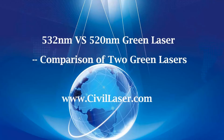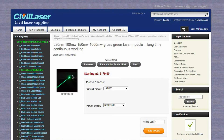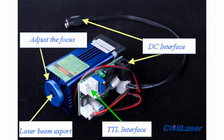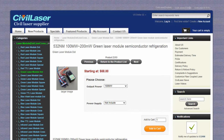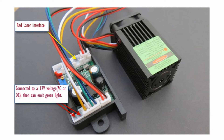Hello, this video is from Civil Laser. 532 nanometers and 520 nanometers laser, both of them are green lasers. What is the difference between these two green lasers? Let's check it now.